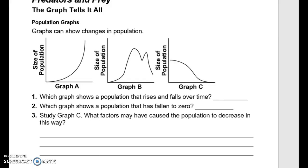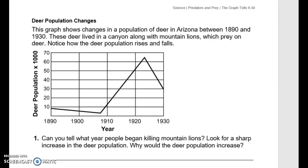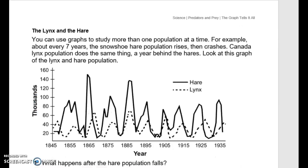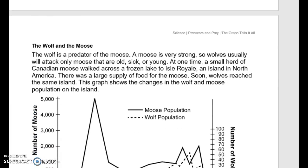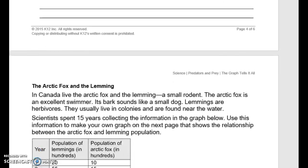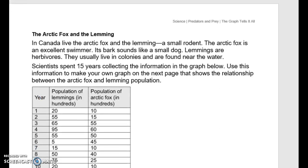Study graph C. What factors may have caused the population to decrease this way? Continue to look at deer population changes, the lynx and the hare, the wolf and the mouse, and the arctic fox and the lemming.